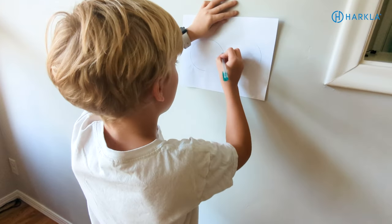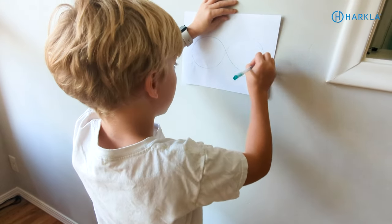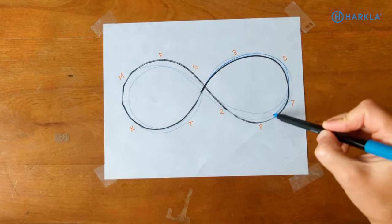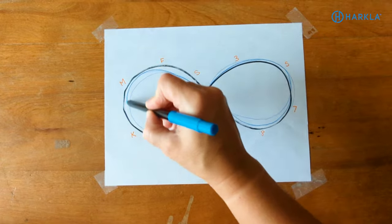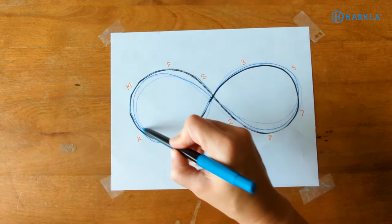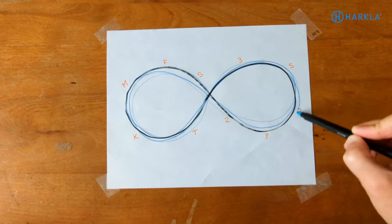This is great for targeting the visual system, visual tracking, and ocular motor skills, and crossing midline gets both sides of the brain firing. If you can't do it on a wall, use a regular-sized piece of paper, making sure the infinity loop is at eye level and placed at midline. Another thing I like is writing letters, numbers, shapes, or colored dots along the infinity loop and having the child call them out as they trace — this adds cognitive processing and processing speed work.